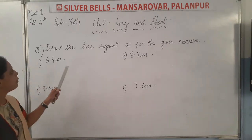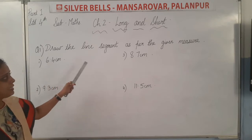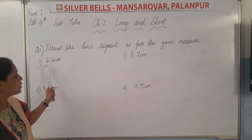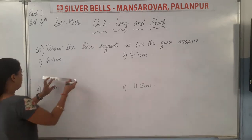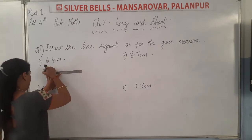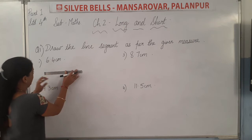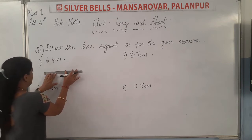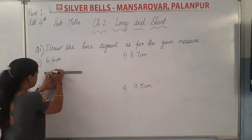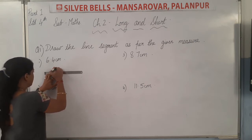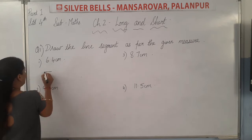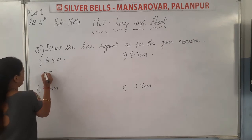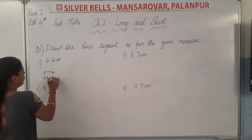Draw the line segment as per the given measure. The first line segment is 6.4 centimetre. So, how can you draw it on your scale? Keep the scale here and start from here. Aapko exactly 6.4 centimetre length — after 6, we have to count 4 lines: 1, 2, 3, 4. So that is 6.4 centimetre. Then, you will mark the points — you can give any name, A and B — and write 6.4 centimetre.